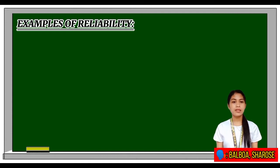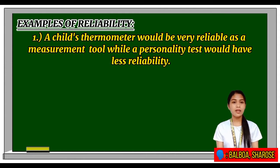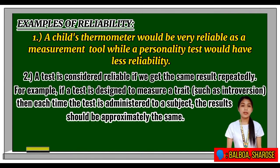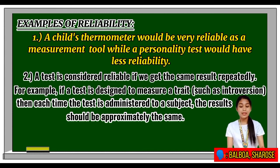Examples of reliability: First, a child's thermometer would be very reliable as a measurement tool, while a personality test would have less reliability. Second, a test is considered reliable if we get the same result repeatedly. For example, if a test is designed to measure a trait such as introversion, then each time the test is administered the result should be approximately the same.